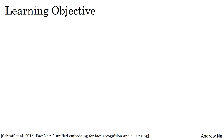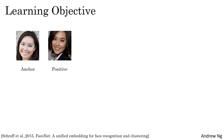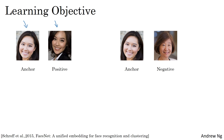To apply the triplet loss, you need to compare pairs of images. For example, given this picture, to learn the parameters of the neural network, you have to look at several pictures at the same time. Given this pair of images, you want their encodings to be similar because these are the same person. Whereas given this pair of images, you want their encodings to be quite different because these are different persons.